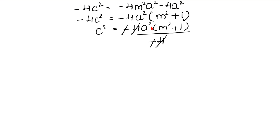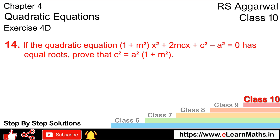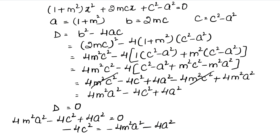So what was it — c² = a²(m² + 1), and this is proved. So this is the answer.